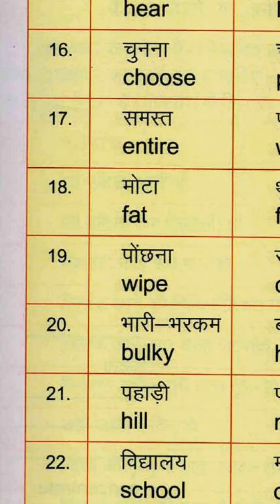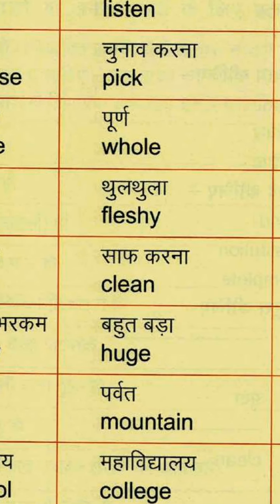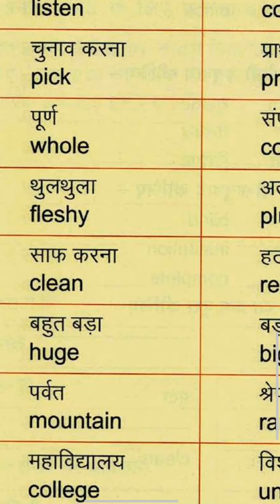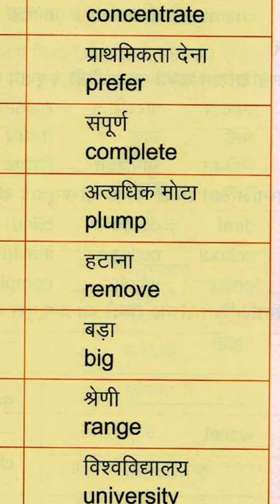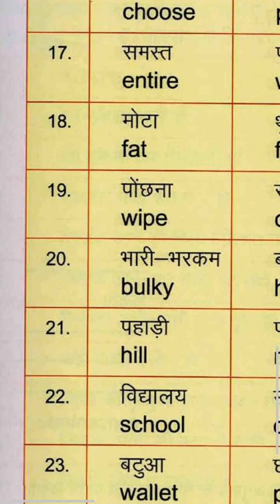Sixteenth group: Chunna means Choose — C-H-O-O-S-E. Chunaav karna means Pick — P-I-C-K. And Prathamikta dena means Prefer — P-R-E-F-E-R.